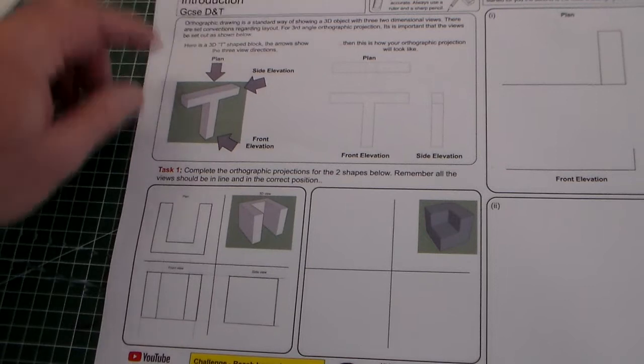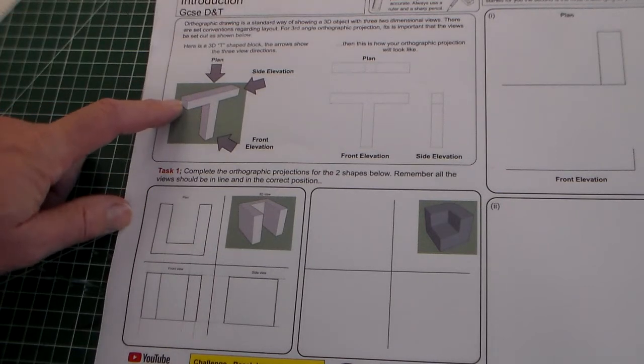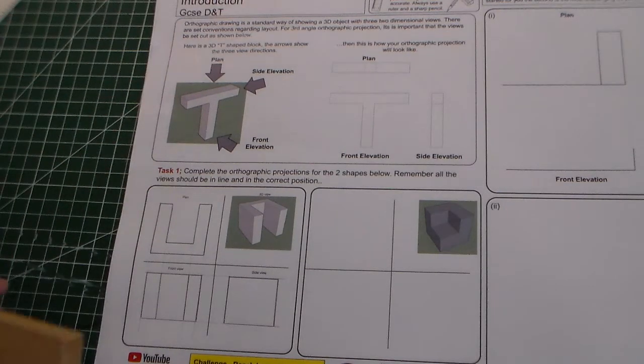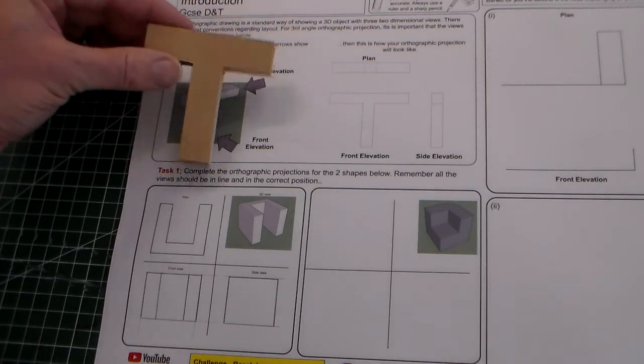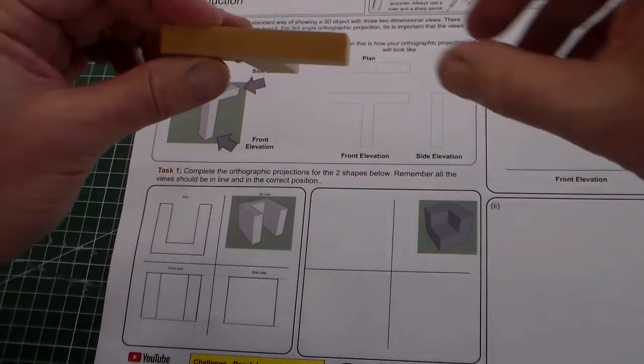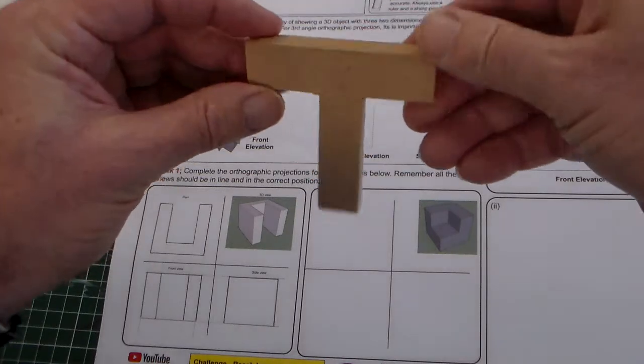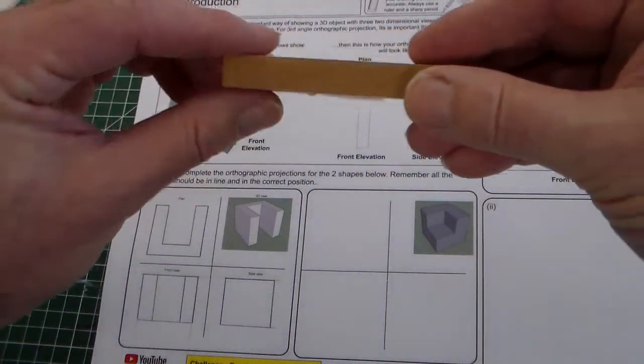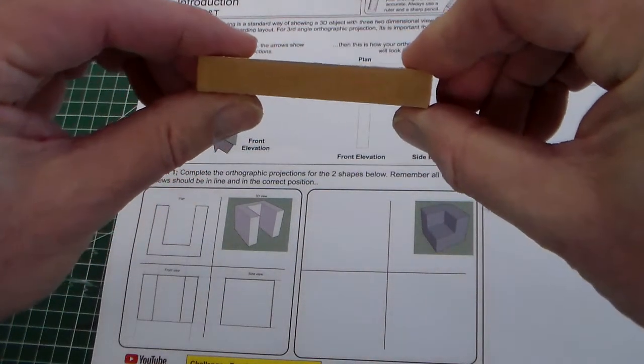So what we're looking at here, we've looked at this letter T, and I've actually got one here. So we said that we have three views. So if we start off here, we have our plan view, which is looking down.